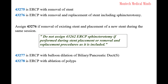CPT Code 43275 is ERCP with removal of a stent. CPT Code 43276 is ERCP with removal and replacement of a stent, including sphincterotomy. Assign 43276 if removal of an existing stent and placement of a new stent occur during the same session. Do not assign 43262 ERCP sphincterotomy if performed during stent placement or removal and replacement procedures, as it is already included.